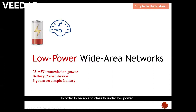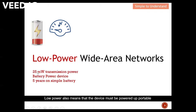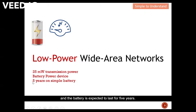In order to be classified under low power, the transmitting power must be less than 25 milliwatts, which is around 14 dBm. Low power also means that the device must be powered by a portable battery like AA, AAA, or even coin-size battery, and the battery is expected to last for five years.